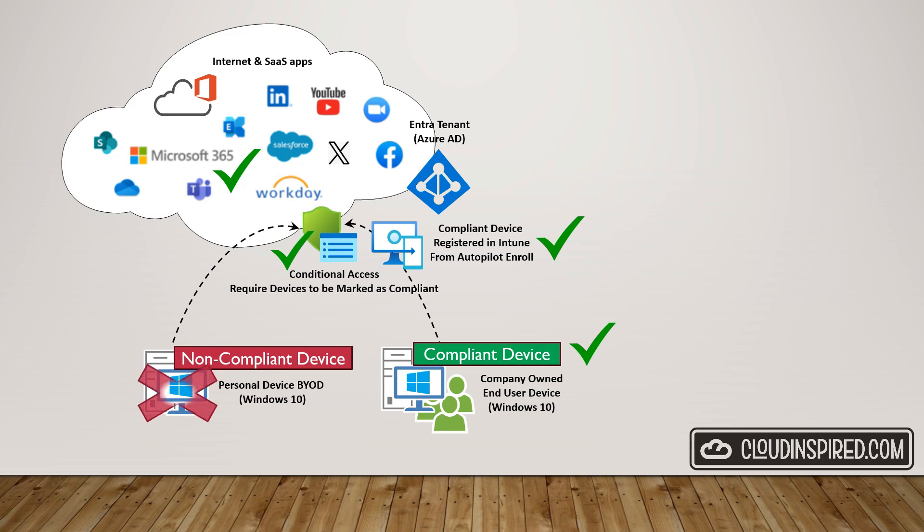Personal non-compliant Windows 10 devices will not be enrolled into Intune and not a member of the Autopilot device group, therefore being flagged as non-compliant. Conditional access policies will be created targeting Microsoft 365 applications and allowing access for compliant Windows 10 devices only, requiring the device to be marked as compliant. If the device isn't compliant, access will not be granted and the device will be blocked.